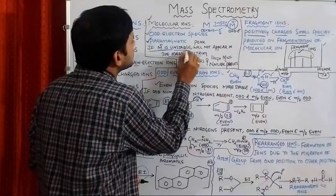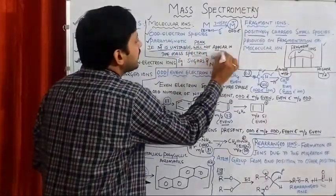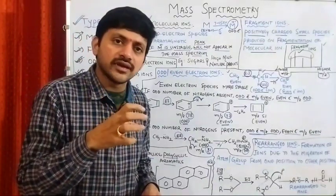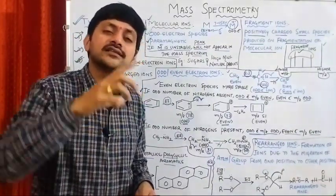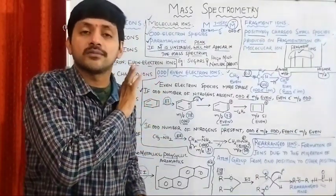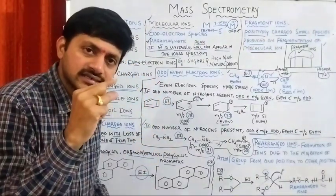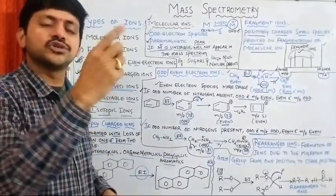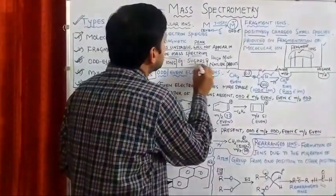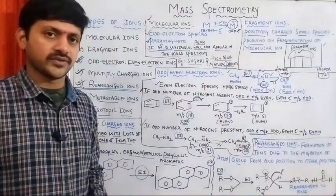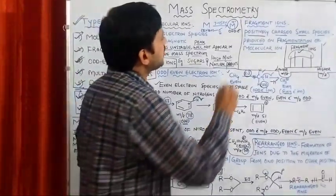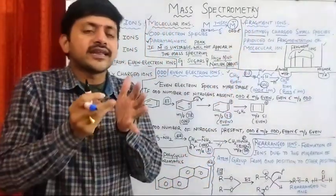If the molecular ion is unstable, the peak will not appear in the mass spectrum. There are compounds in organic chemistry where molecular ion stability is very low. As a result, the intensity in the mass spectrum is very low.